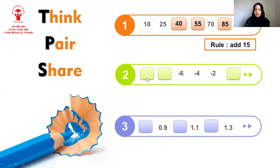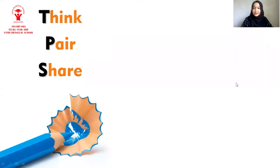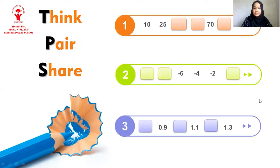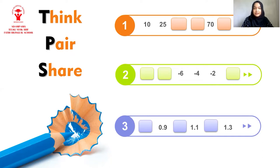The second one: the first term is blank, the second is also blank, and the third term is negative 12. Here I have three questions for you. Now it's your turn. I want you to fill in the blank and also find the rule for each sequence. You can also use your notebook and pencil to help you find the answer. I will give you the time to think.